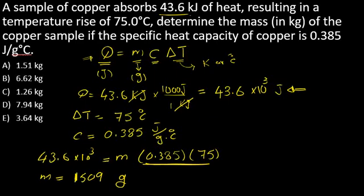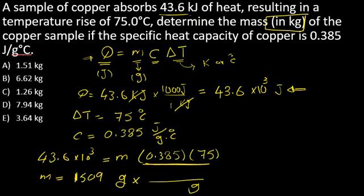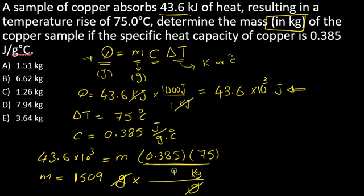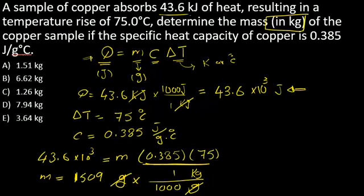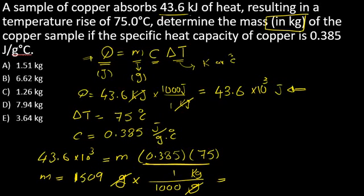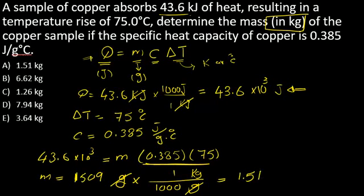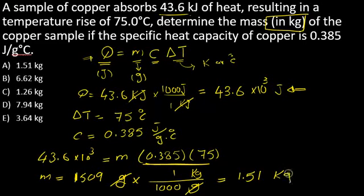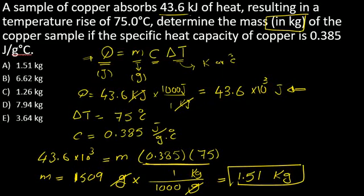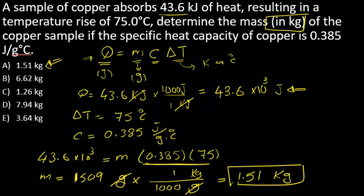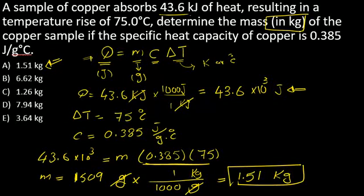Converting grams to kilograms: one kilogram equals one thousand grams, so dividing 1509 by 1000 gives 1.509, which we round to 1.51 kilograms. This is the correct answer. Thank you for watching — please like and subscribe, and leave any questions in the comments.